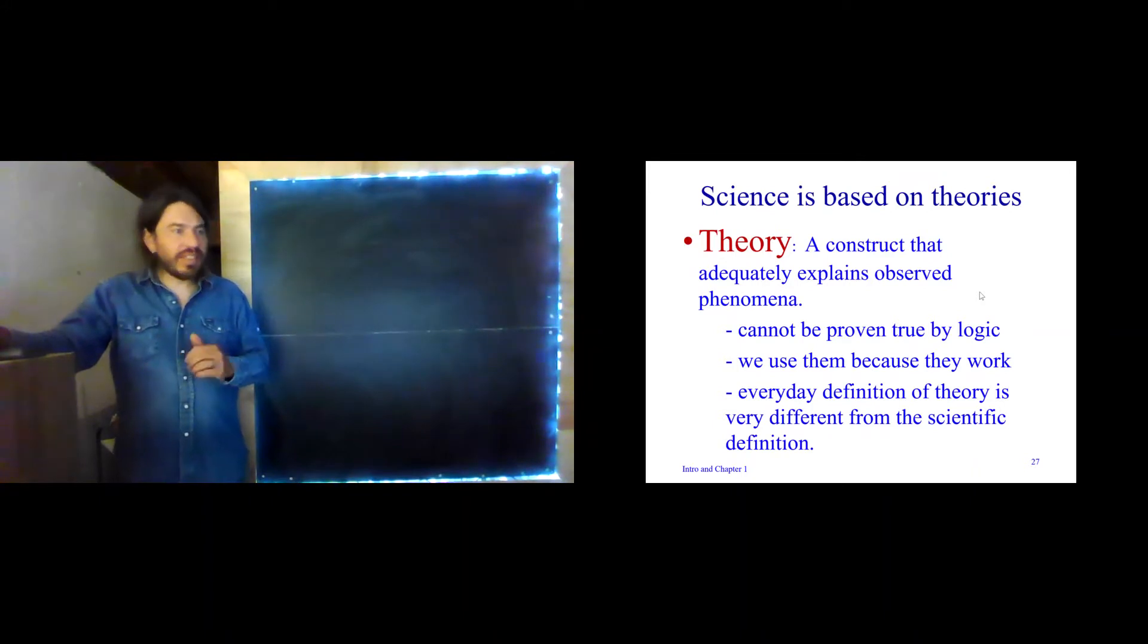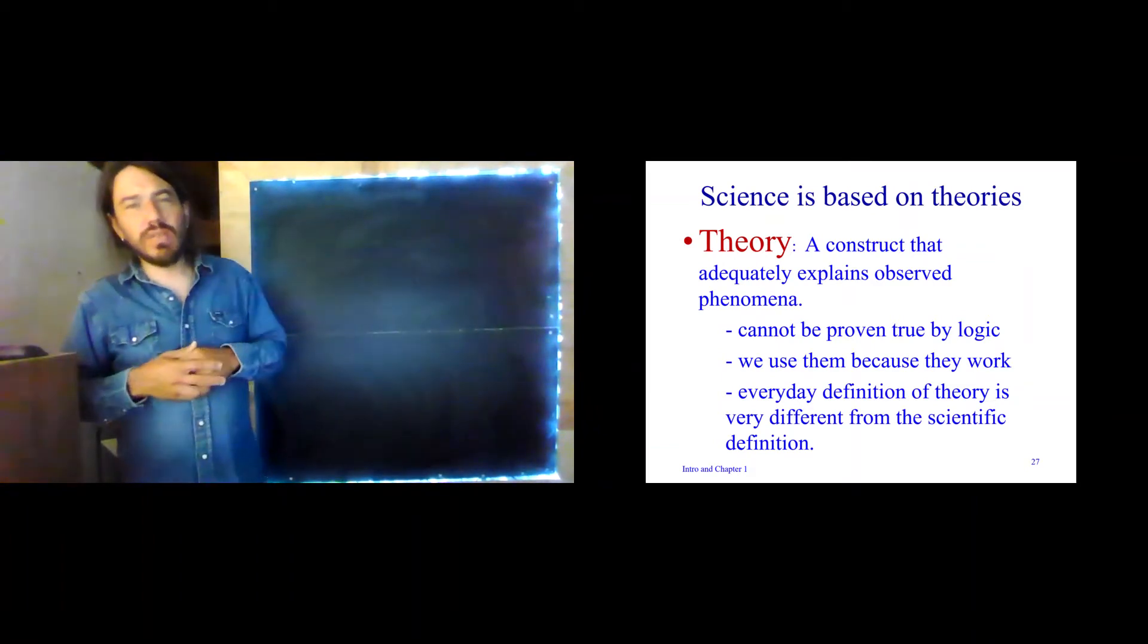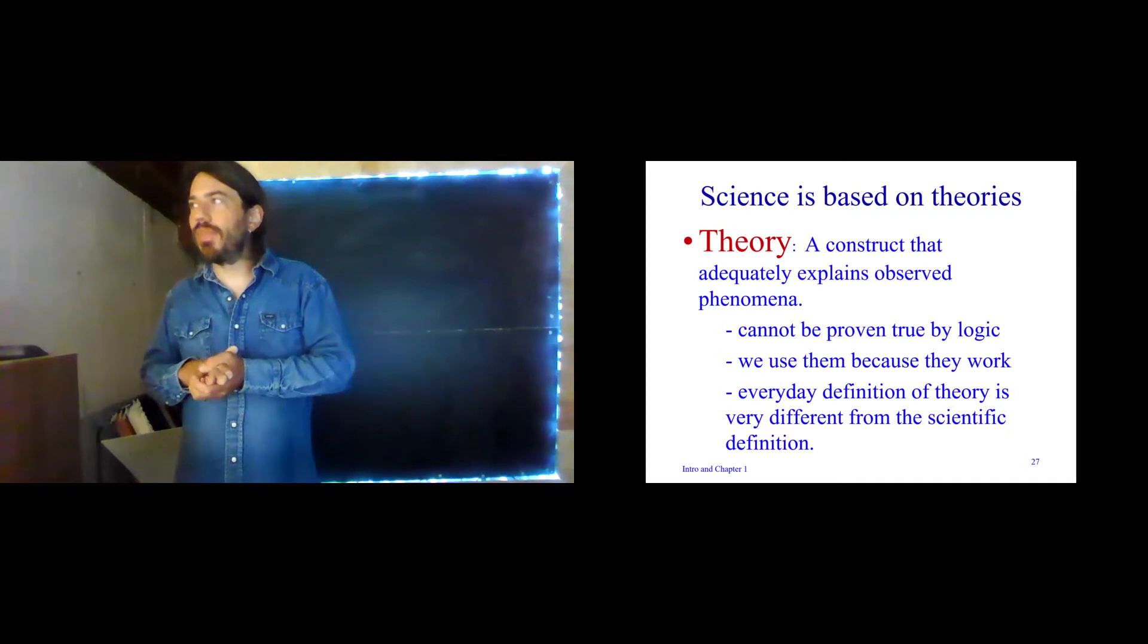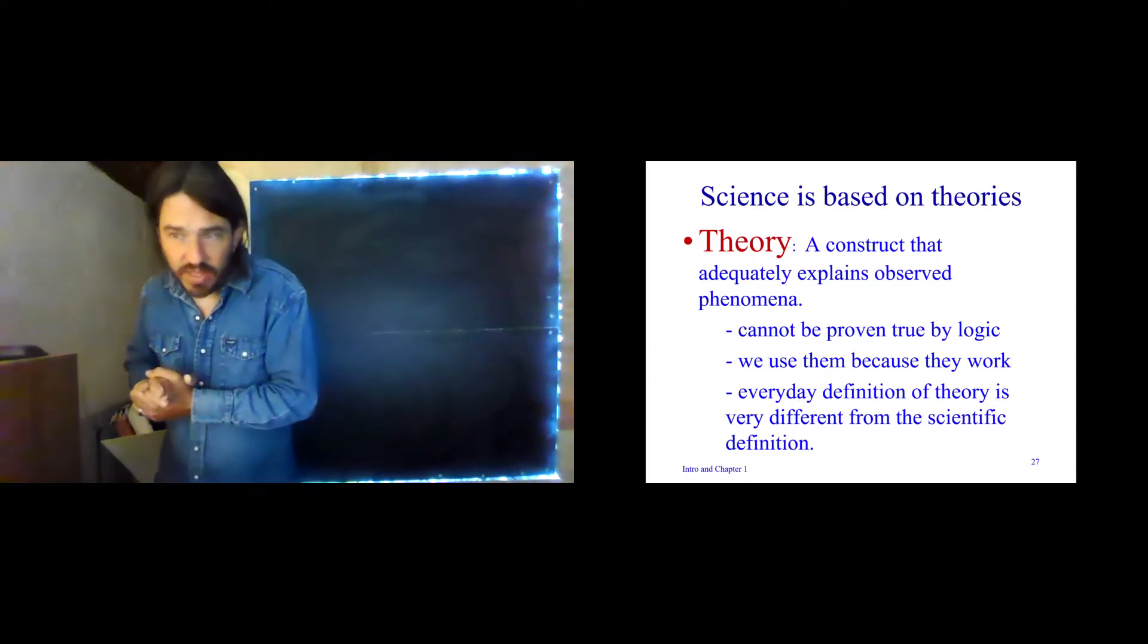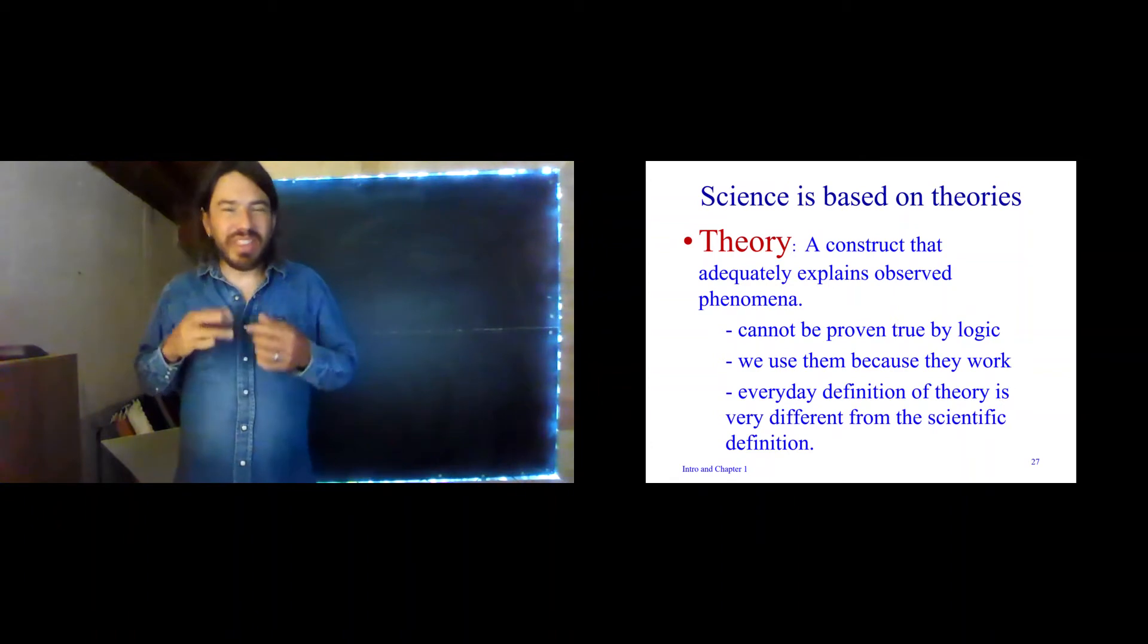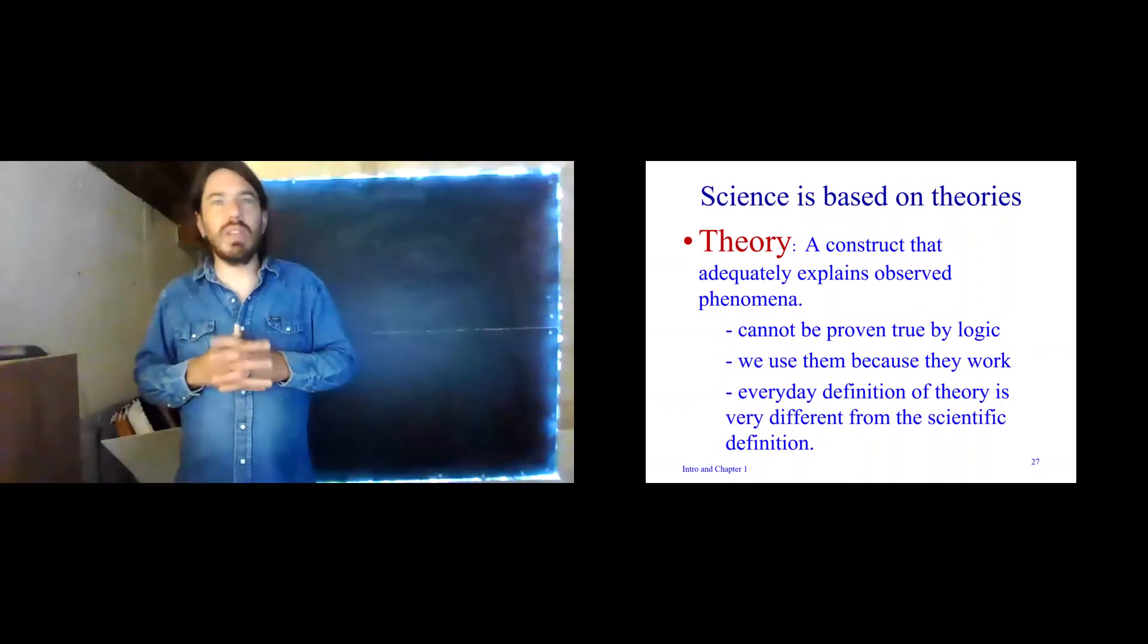So science is based on theories. And a theory is a construct that adequately explains observed phenomena. Theory is one of these words that's used very differently in everyday life than it is in a scientific setting. I could say I have a theory that my sourdough bread tastes better when I rise it in the refrigerator than when I rise it on the counter. What do I mean by that? It's just a notion, it's really my opinion. So a theory in everyday life can come down to opinion. But in science, theory means something very different.